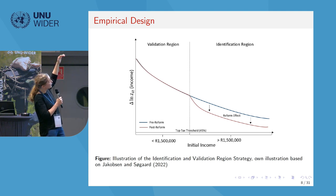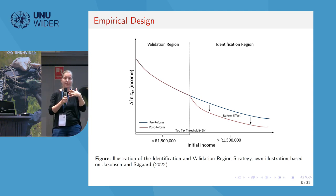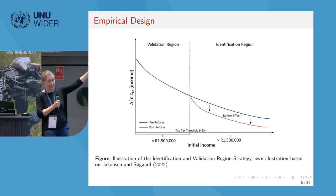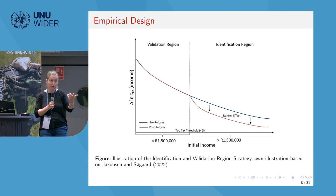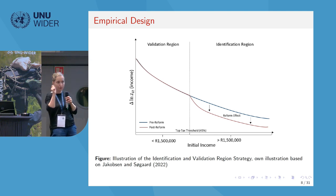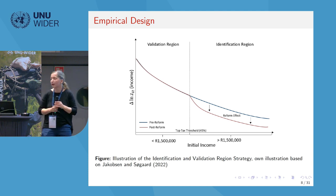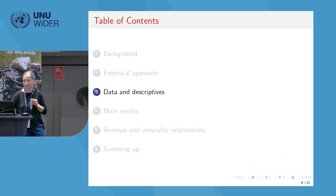Our empirical identification strategy is to take a pre-reform period to identify the blue line — a period where there was arguably no change in the PIT system — and use that period to model differences in income trends at the upper and lower end of the income distribution. Then we look at the reform period, shown in red. In the reform period, the reform effect kicks in, and we would expect individuals at the upper end of the income distribution to reduce their taxable income reporting because of the tax shock.